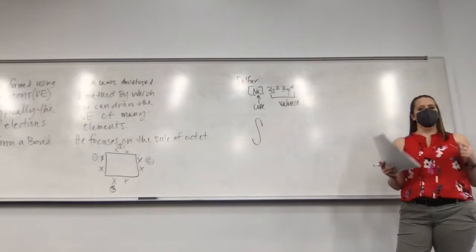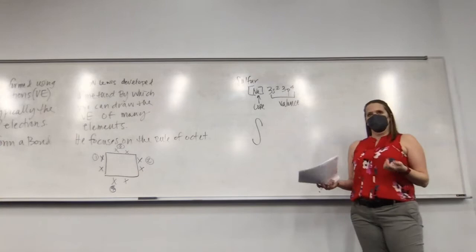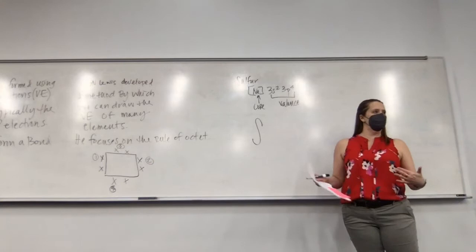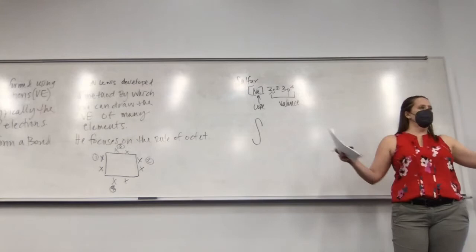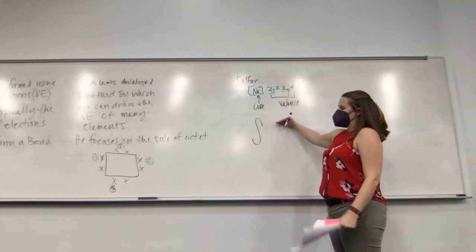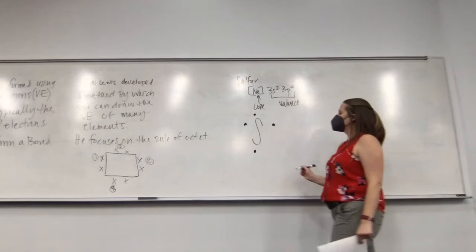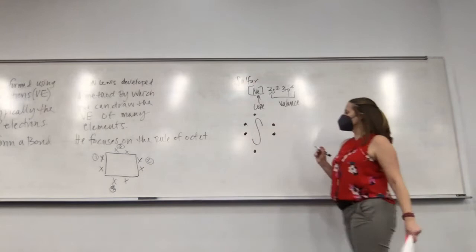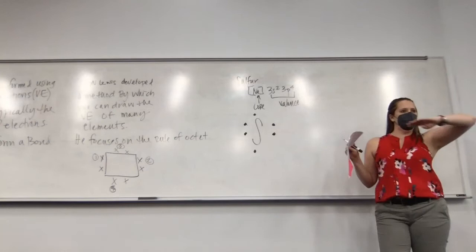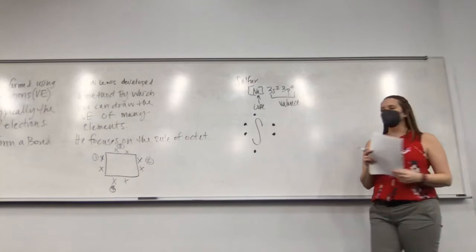You have a couple of choices: memorize the rules, or memorize the eight options since there are only eight different valence electron counts. We have six electrons to place around sulfur — one on either side, then one on top, one on the bottom. The remaining two electrons follow the same rules: one on either side, giving you lone pairs. You can rotate the structure so your paired dots are on any side.